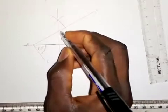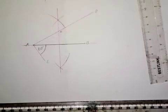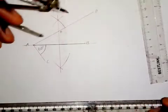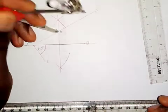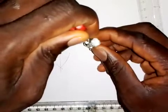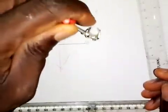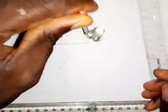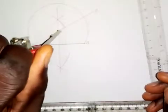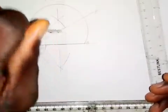The next thing I'm going to do is to take my compass, put it at point O, and extend it to B or A. Then I will draw a circle — I don't want to make it a complete circle, so this partial arc is okay for me.